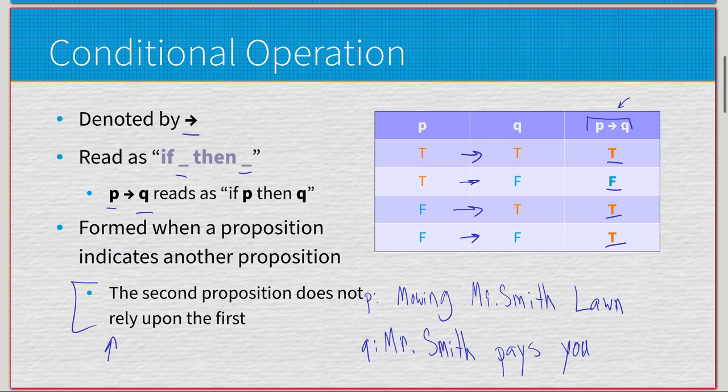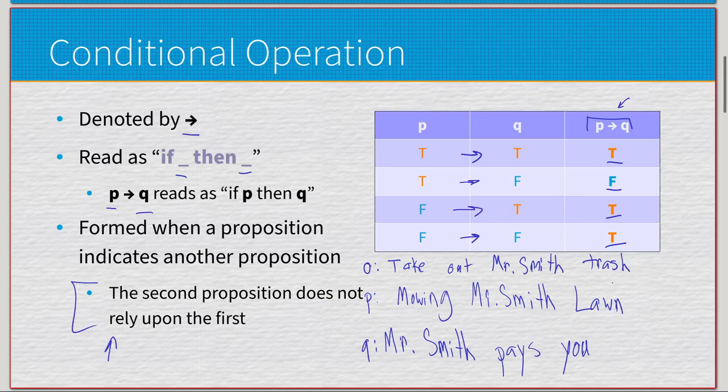Like I said, imagine this is an isolated bubble. What if I had proposition R where we take out the trash or something, just anything else, and I get paid? So it's not reliant upon the first one. There are many other things that could lead to Mr. Smith paying me, or maybe I got paid by somebody else. This whole thing is about me getting paid, but it's not reliant upon the first one.